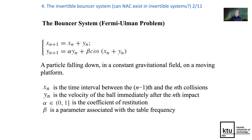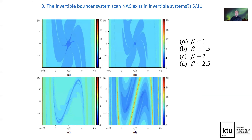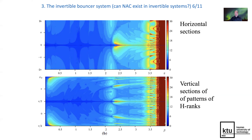The bouncer system describes a particle falling down in a constant gravitational field on a moving platform. It is completely invertible. The bifurcation diagram is shown at fixed alpha and varying beta, along with patterns of H-ranks at different beta. These three-dimensional H-ranks, when sectioned in three-dimensional space, result in plane images and plane patterns of H-ranks in horizontal and vertical sections.